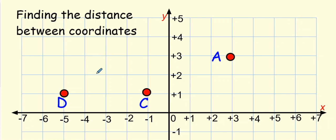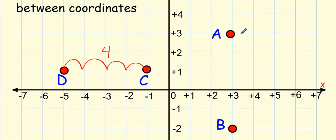The last thing we're going to look at is distance on a coordinate plane. If you want to find the distance between two points, all you have to do is count: one, two, three, four — so the distance between those is four. And down here the distance is one, two, three, four, five — so that's five. That's the last thing.